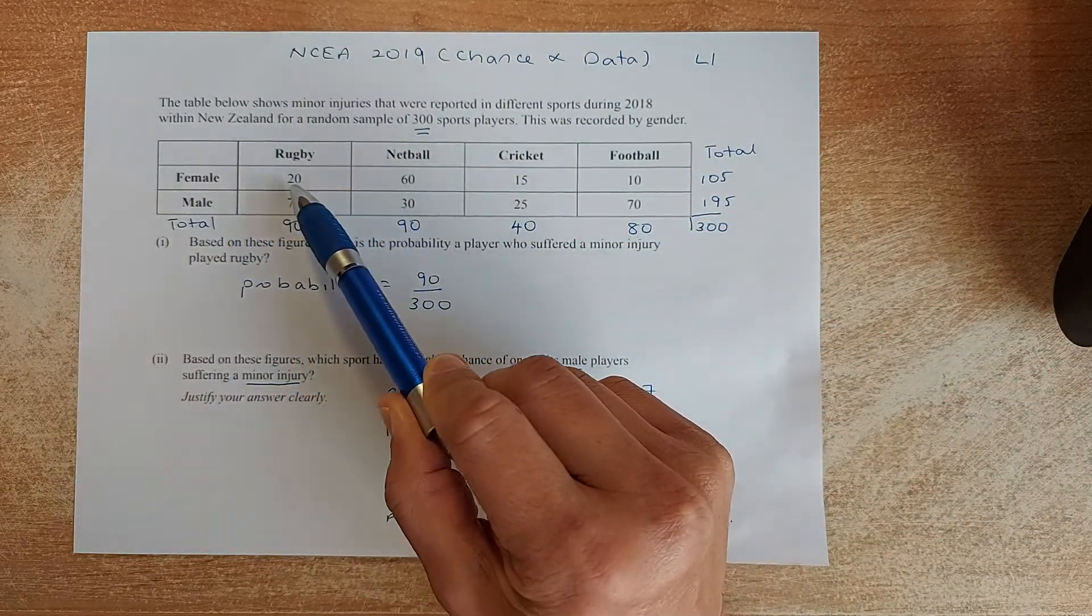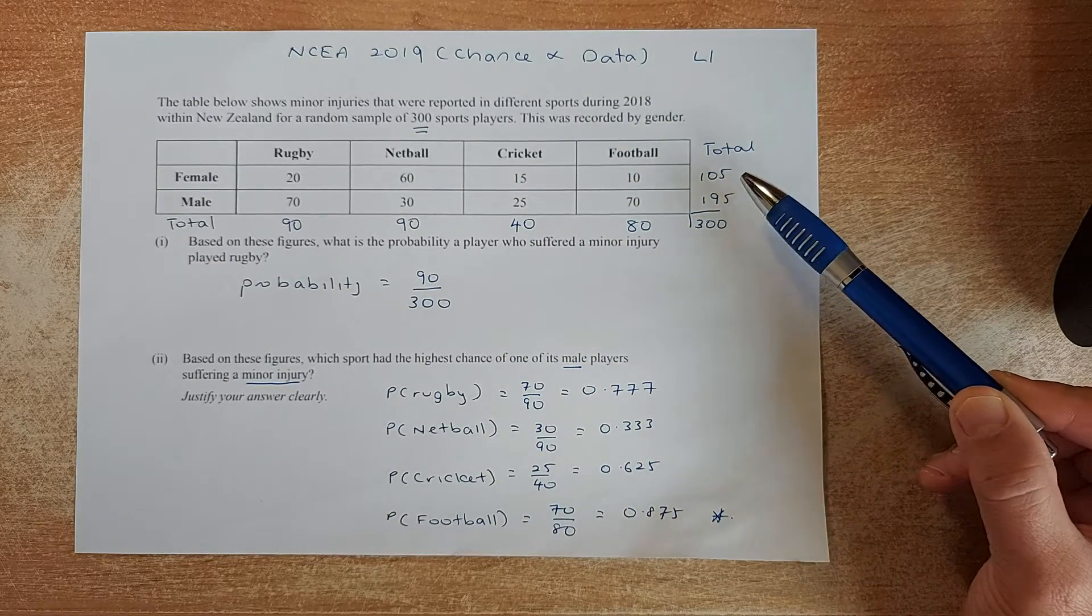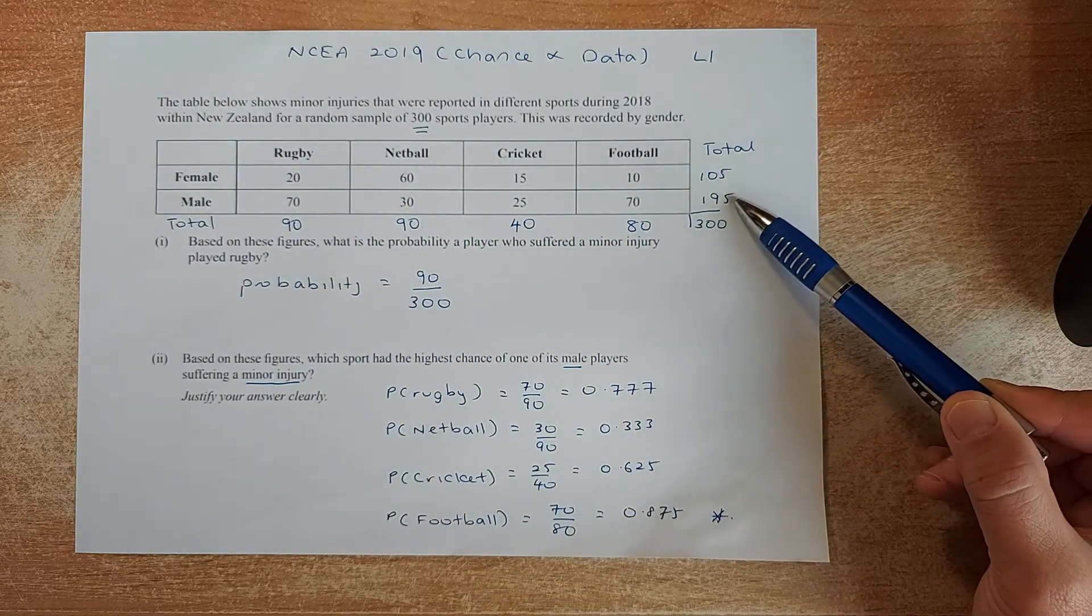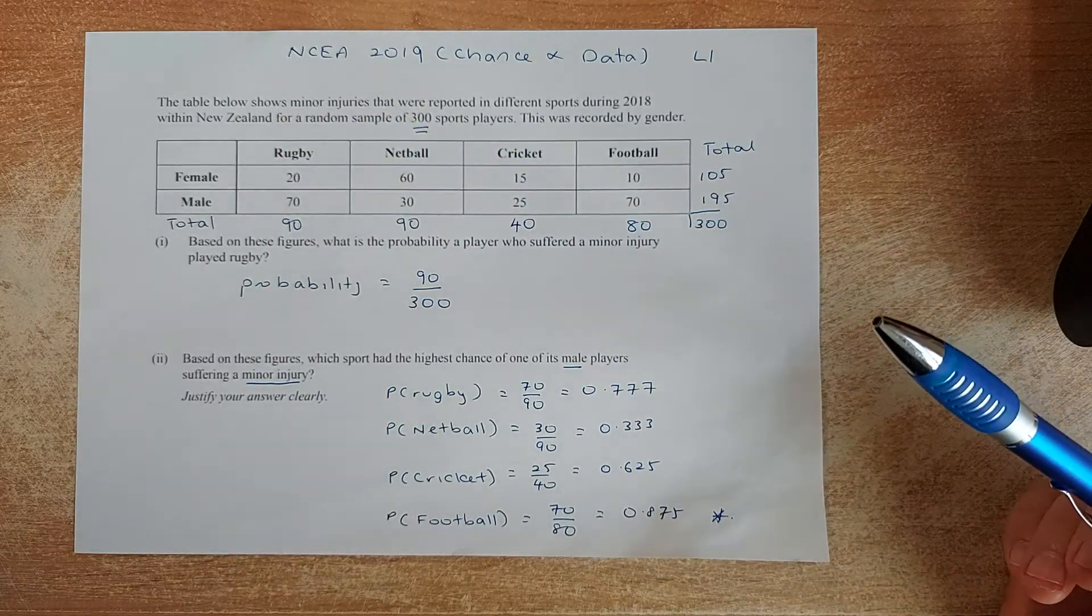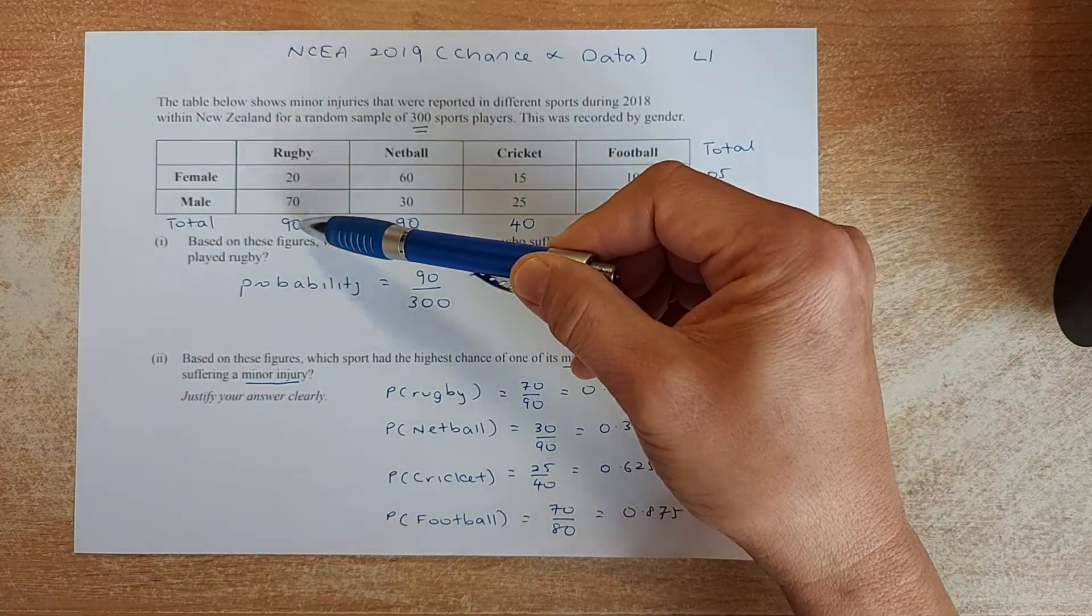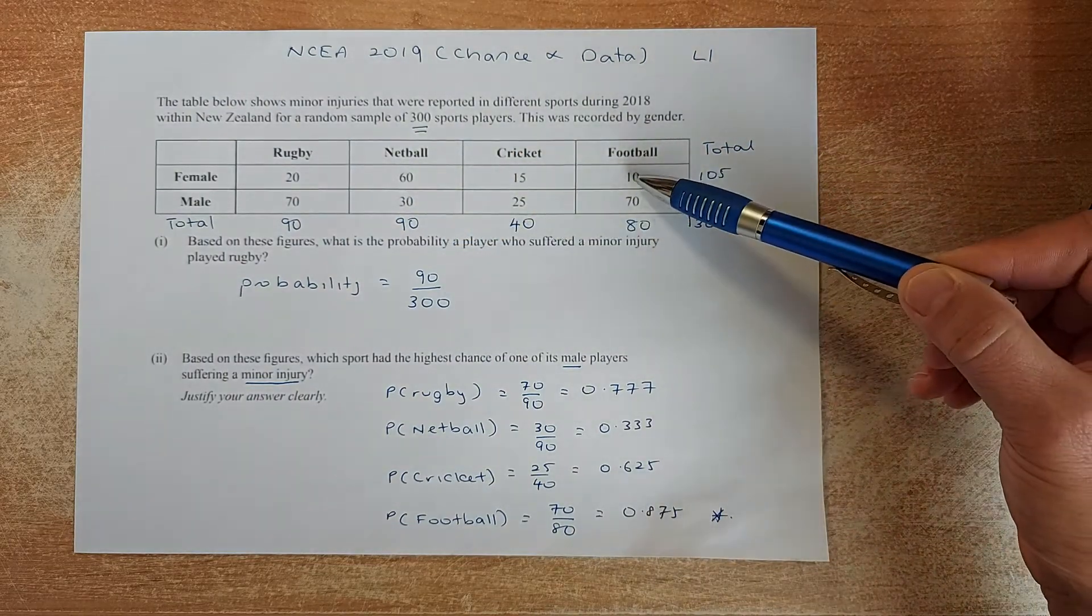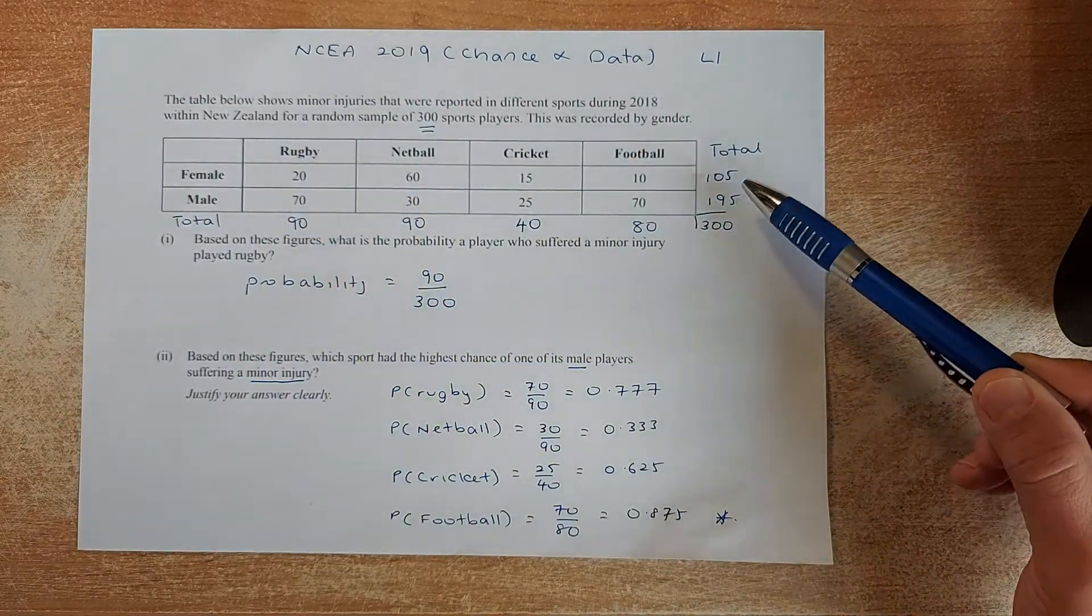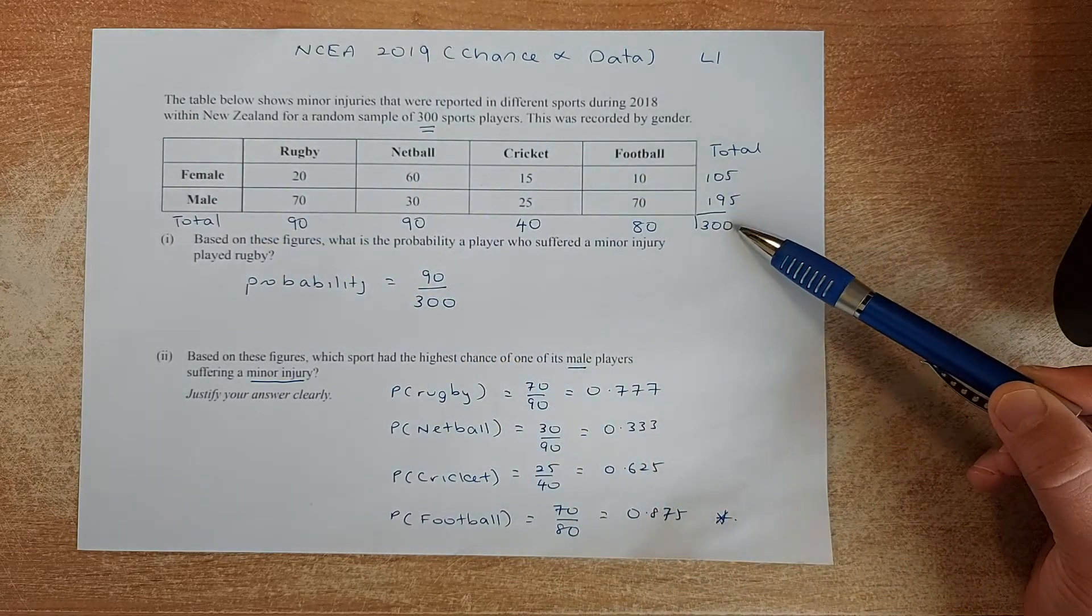The first thing you do in a contingency table, you have to calculate the row total as well as the column total. So we have calculated that. So for female, we calculate 20 plus 60 plus 15 plus 10. The row total is 105 for female. And for male, it's going to do the same thing, it's going to be 195. So you add the 2 numbers, you add up to 300 because they tell you that the total number of people are 300.